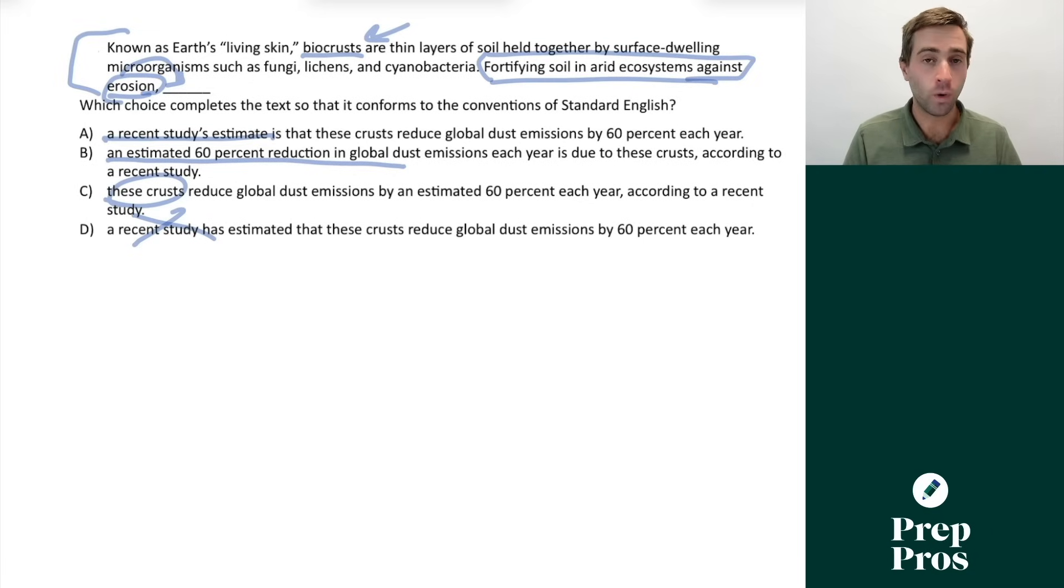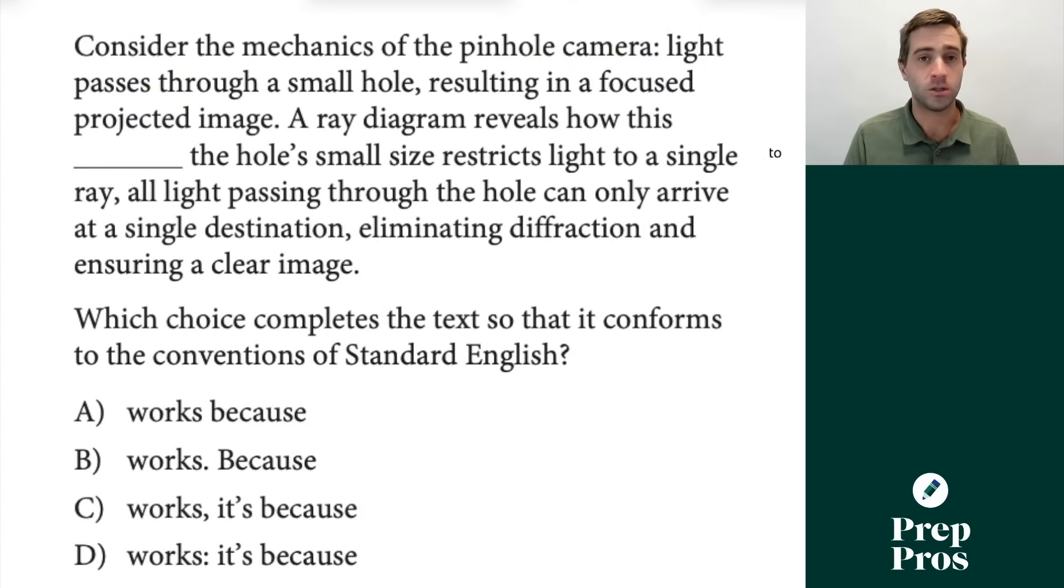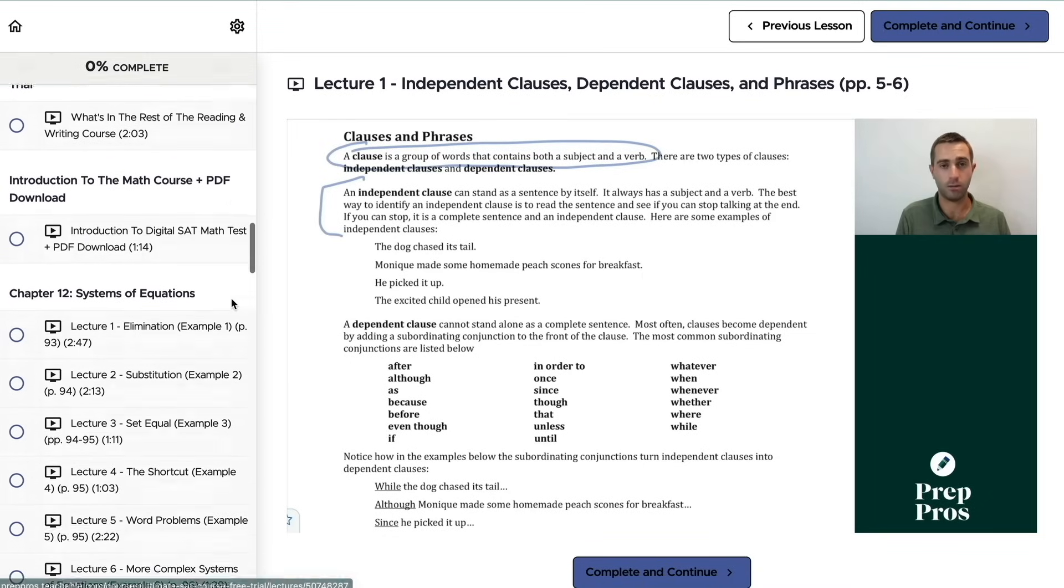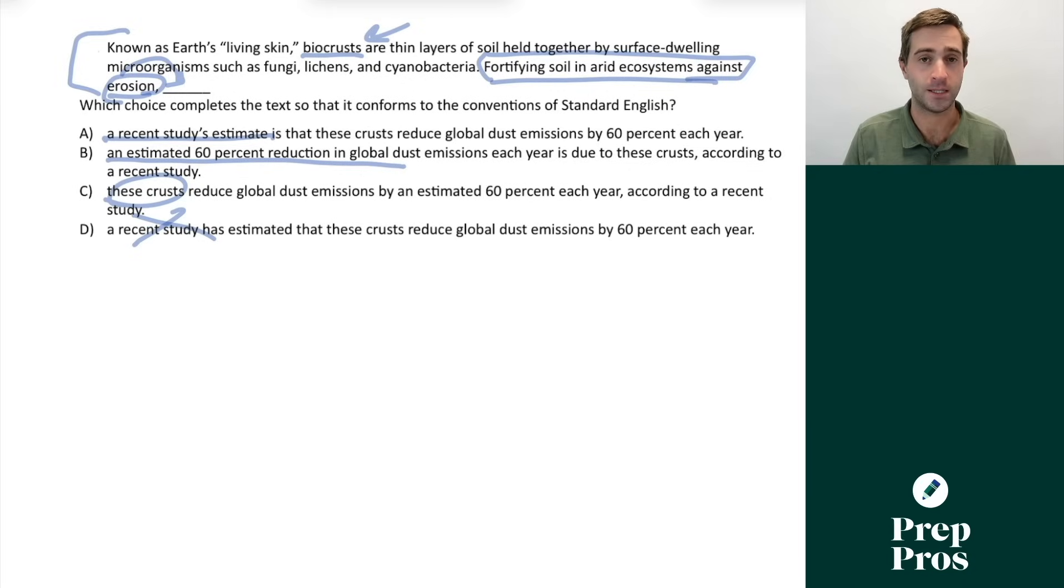Now there's one other grammar concept that you absolutely are going to see on your digital SAT. It's going to be with questions like this. These are sentence structure questions. They're around your ability to identify independent and dependent clauses and understand the rules around connecting them. So make sure you check out the free trial to my ultimate SAT course because you're going to get lessons on that and you're going to get a lot of practice to make sure you can pick those up on test day.